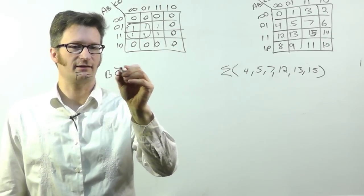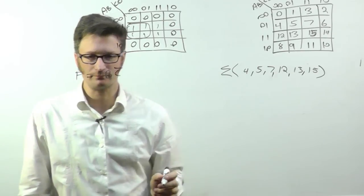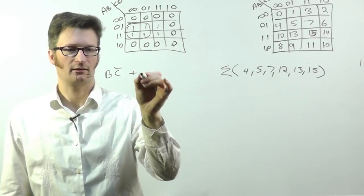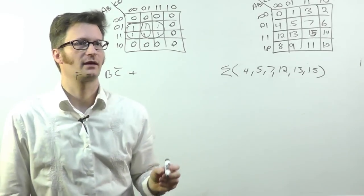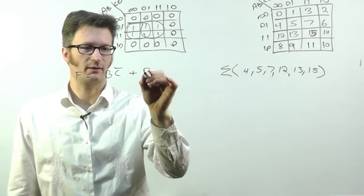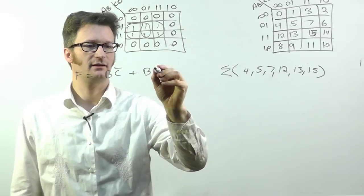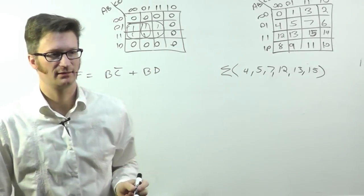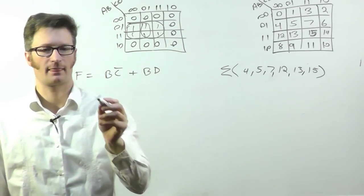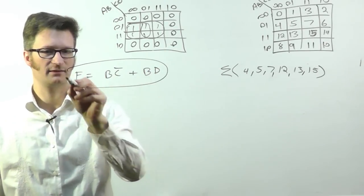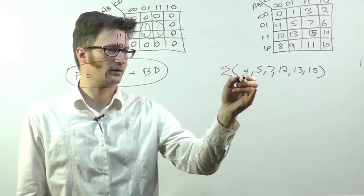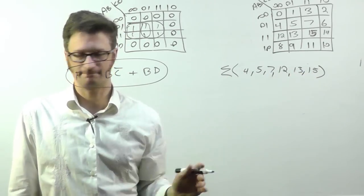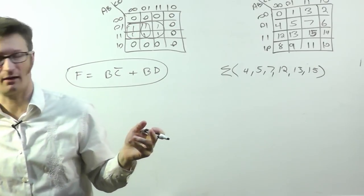And what is common is that B is a 1. I'll just say my function equals this. And what is common in those two columns? And I can say that C bar is common. And then I just have this grouping right here. And B is still common for those. And in these, D is common.